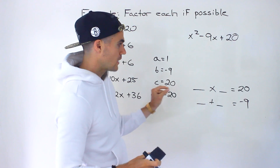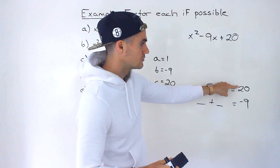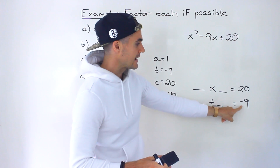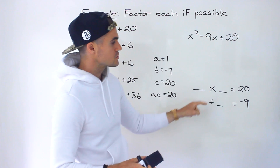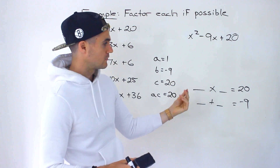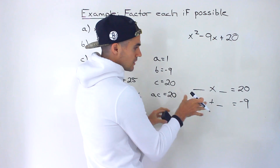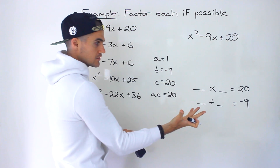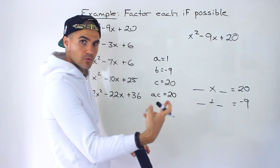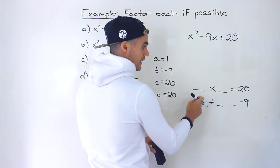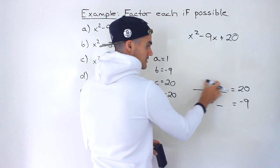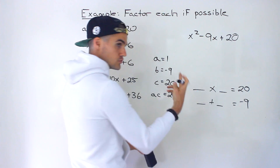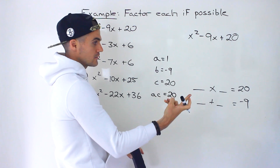Whenever you have a positive A·C value and a negative B value, these two numbers are always going to be both negative. We need two numbers that add up to a negative value but multiply to a positive value, and that can only happen with two negative numbers. If you have a positive and a negative, that can add up to a negative, but a positive times a negative gives a negative value — so it has to be two negative values.